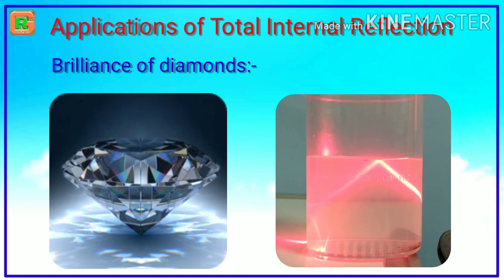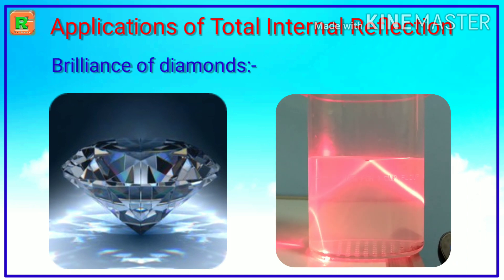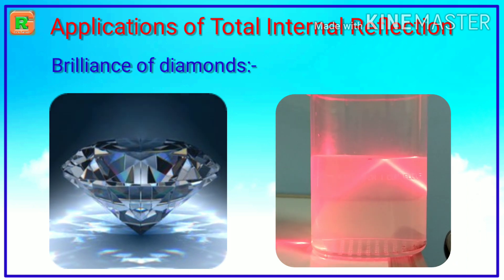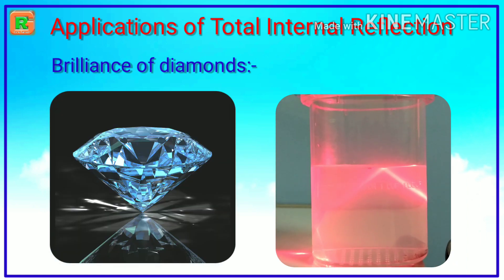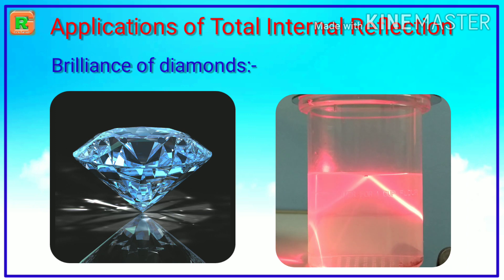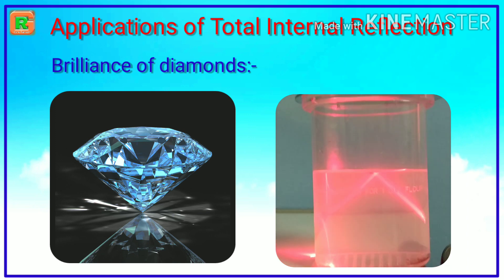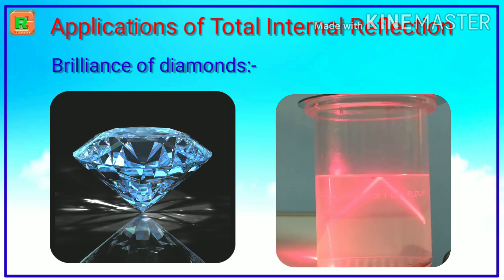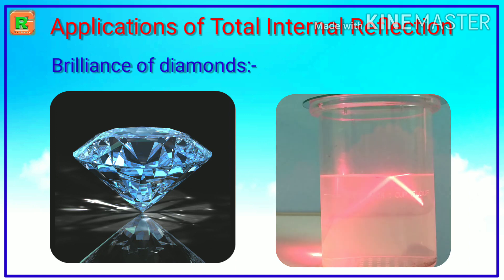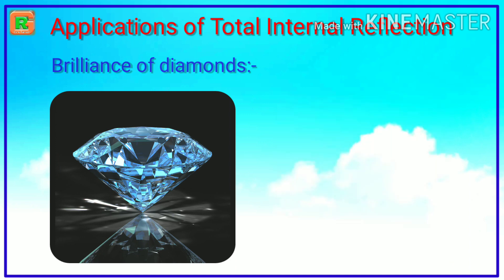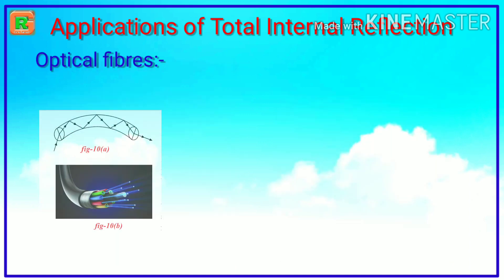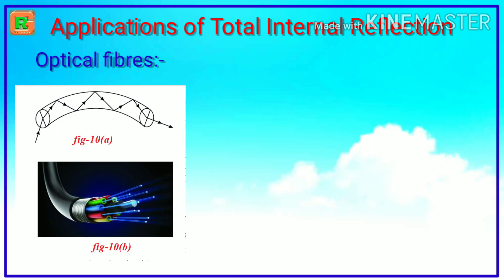The critical angle of a diamond is very low — that is, 24.4 degrees. So if a light ray enters a diamond, it is very likely to undergo total internal reflection, which makes the diamond shine.